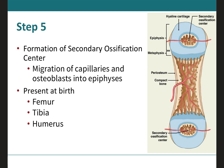In step five, the main event is the formation of the secondary ossification center in the epiphysis of the long bones. Blood vessels invade the epiphysis, accompanied by new osteoblasts that deposit bone matrix in this area, forming the secondary ossification center. The timeline for formation of this secondary center varies from bone to bone, but it is present at birth in the femur, tibia, and humerus.